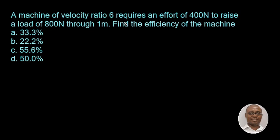A machine of velocity ratio 6 requires an effort of 400 Newton to raise a load of 800 Newton to 1 meter. Find the efficiency of the machine.